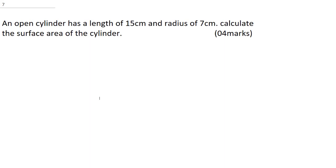Agnes' question says, an open cylinder has a length of 15 cm and radius of 7 cm. Now, in order to solve this question.